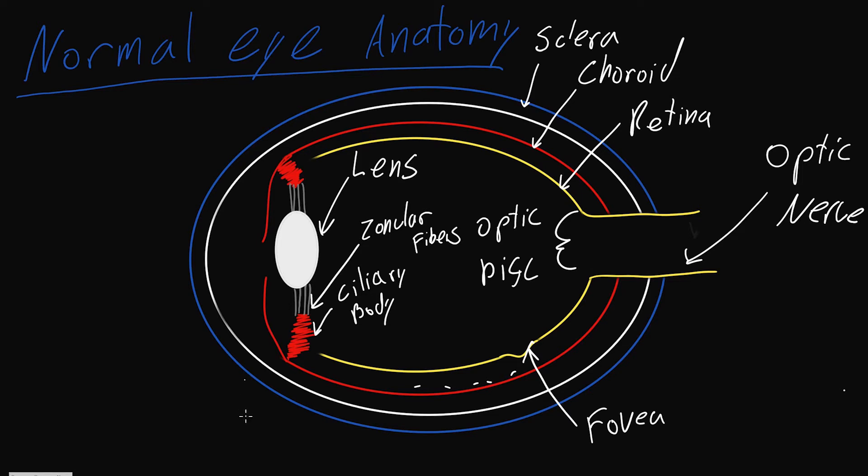And the choroid also connects to the iris, which is the color part of your eye. And the hole between the iris is your pupil. And the part in front of the iris, so this part here, is the anterior chamber.